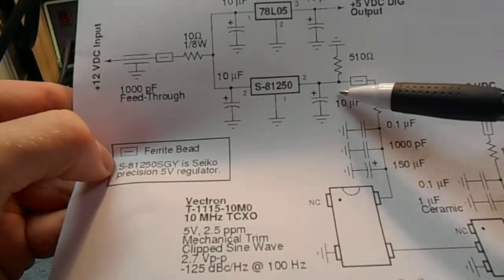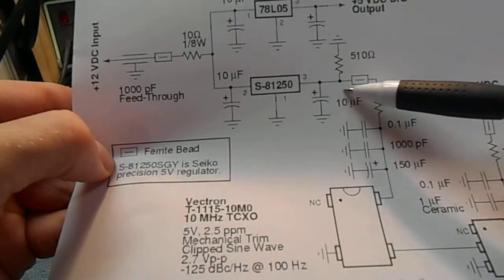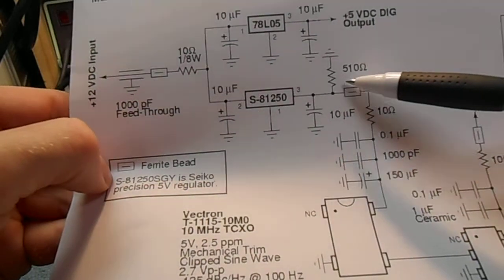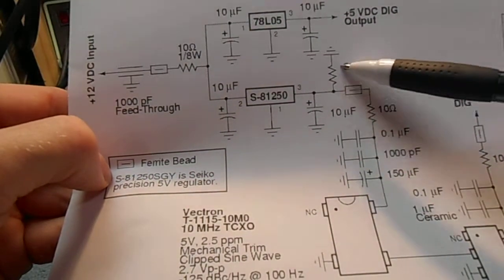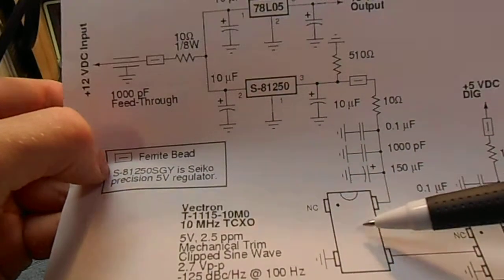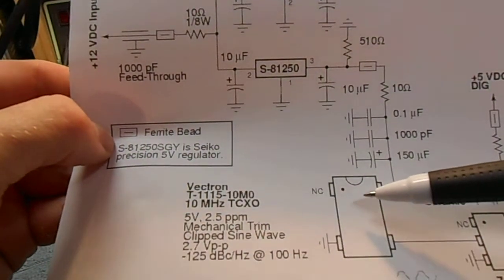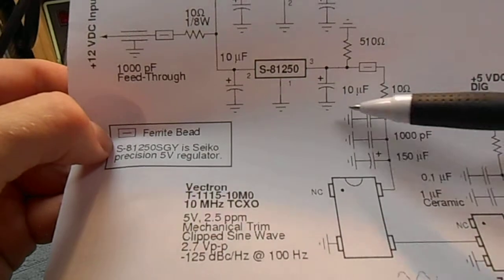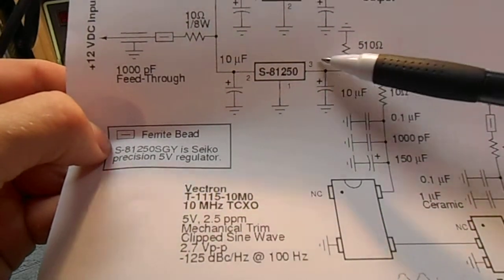These regulators tend to operate best when they have a constant current load. So I added a 510 ohm load to give it a constant 10 milliamps of current. The oscillator itself only draws like 1.5 milliamps. And so you want to boost up the current draw just slightly.